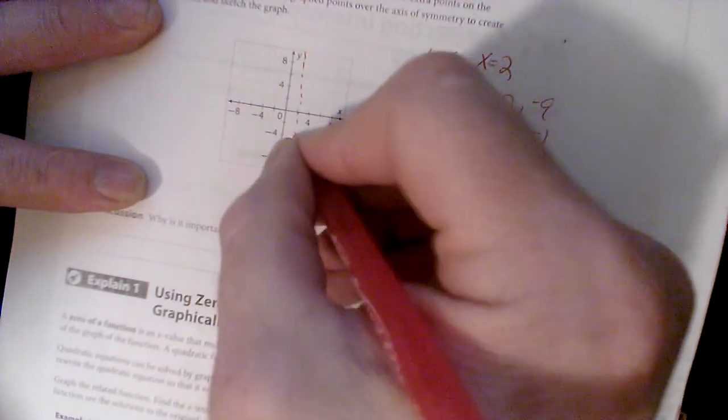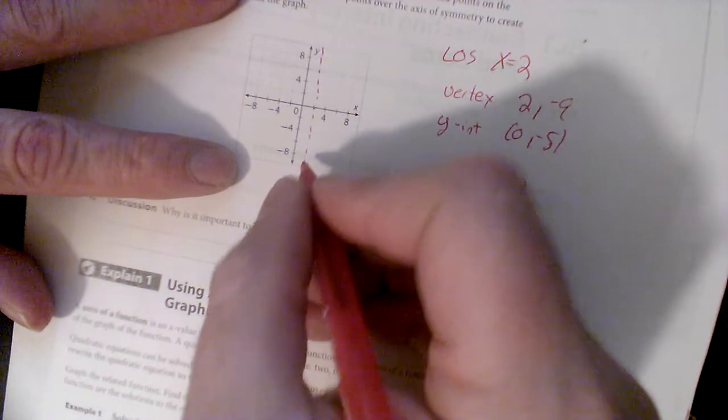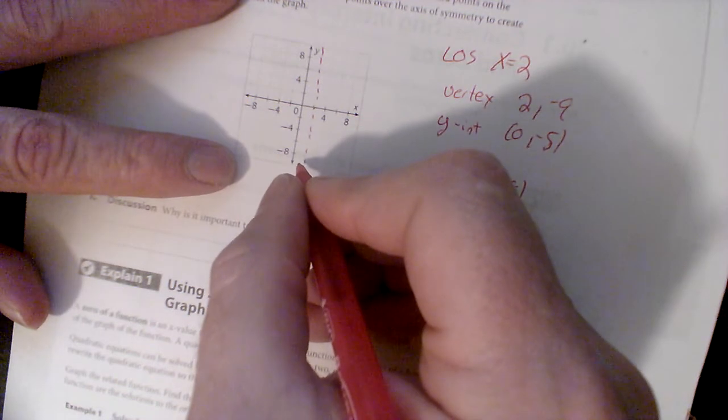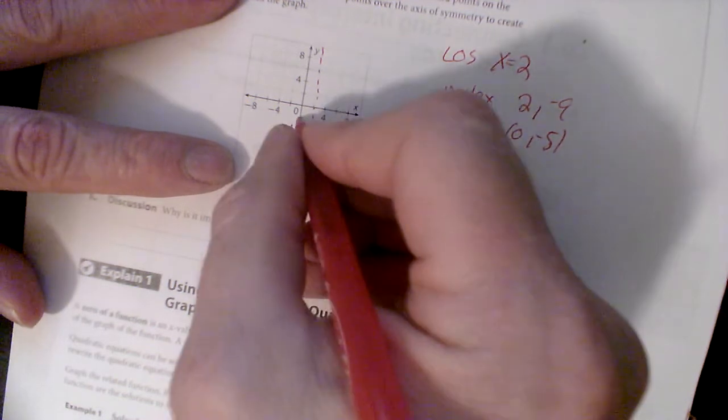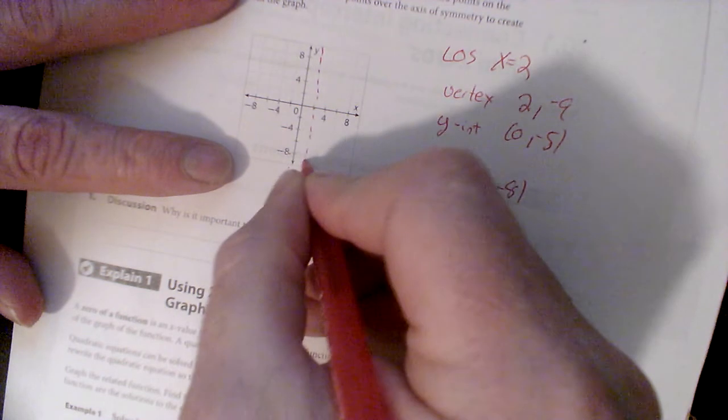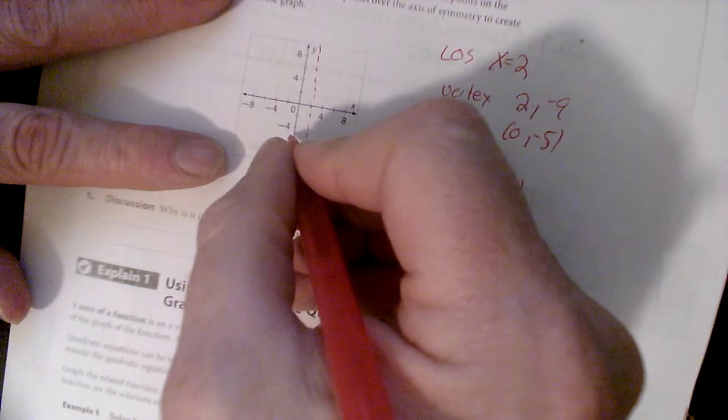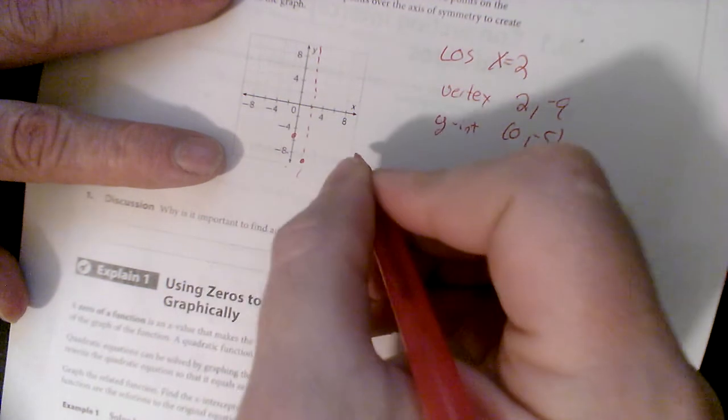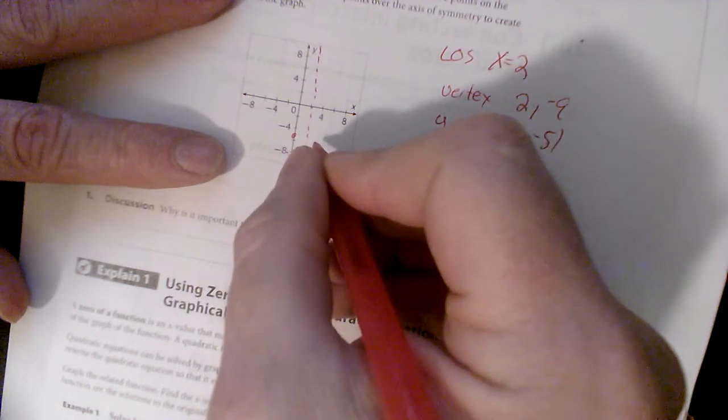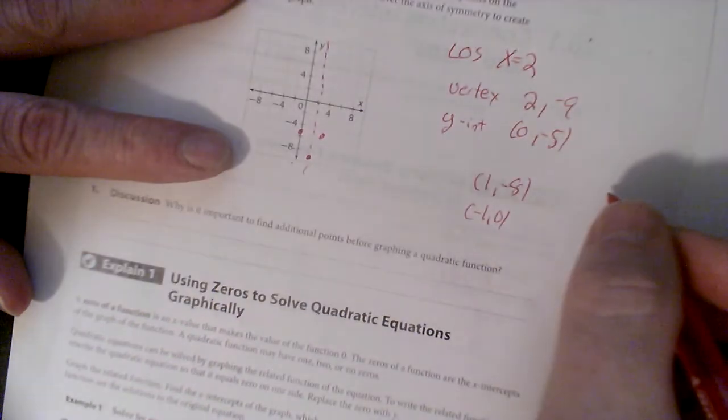Negative 1, 0 there we go. So let's go ahead and plot all these. My line of symmetry is 2, goes right down the middle right here, that's my line of symmetry. On that line of symmetry is a vertex of 2, negative 9, which looks to be, what do these go by? 2, 4, 6, 8, 10 would be down here, so negative 9 would be right about there. Y-intercept 0, negative 5, so it's right about there.